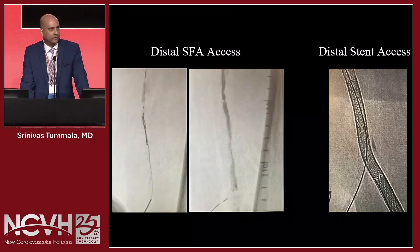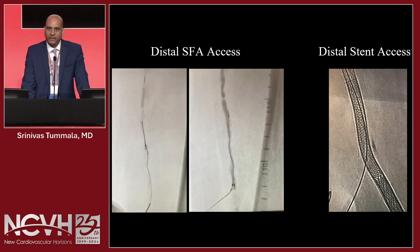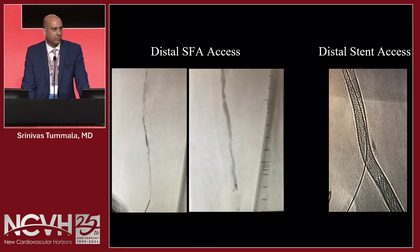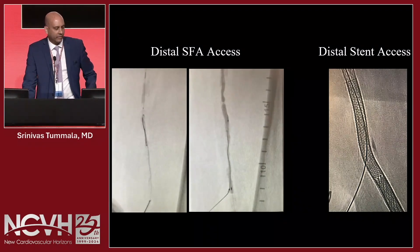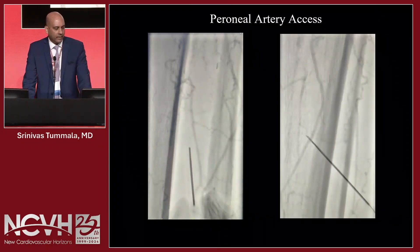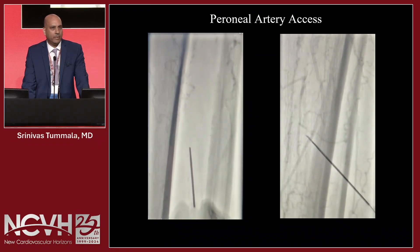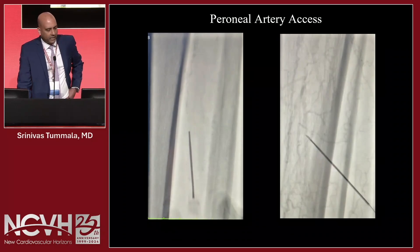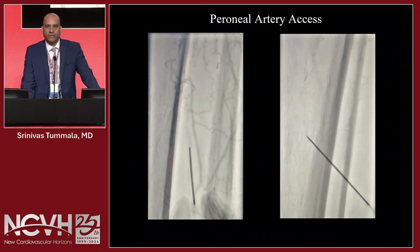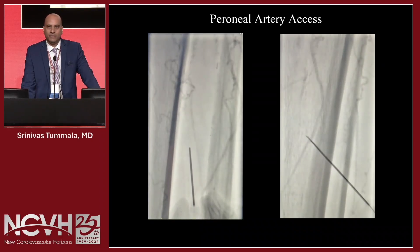Also remember distal SFA access — that can help with complex CTOs, whether calcified or non-calcified. Sometimes when you have an occluded stent and can't get through from above, remember the modified Schmidt procedure. Andre and these guys showed this years ago, and it can be done easily and safely. I reserve this really for limb salvage cases — not for claudication patients who've failed medical management. Your angle of entry is important; you don't want to be too steep because your wire can get sheared.